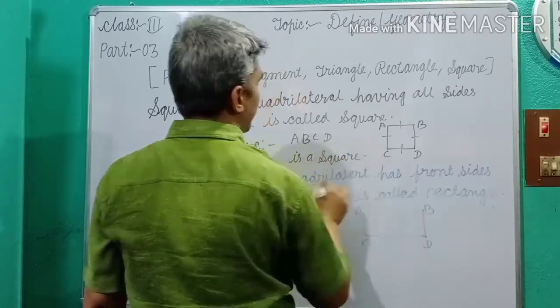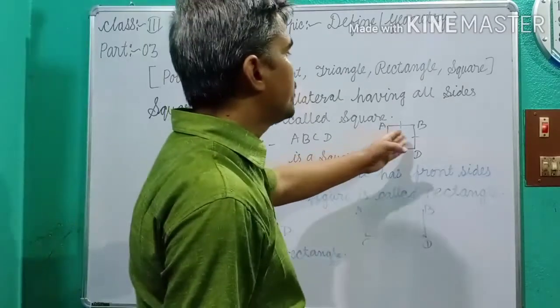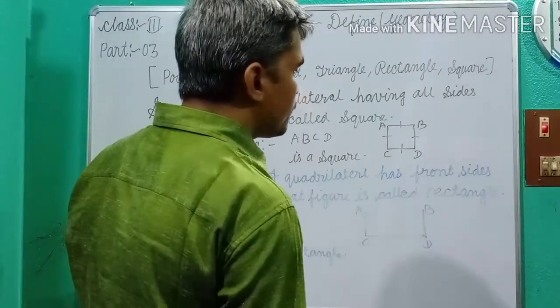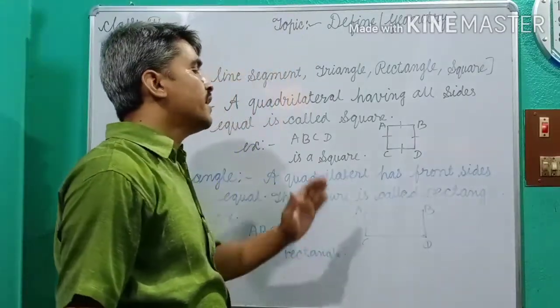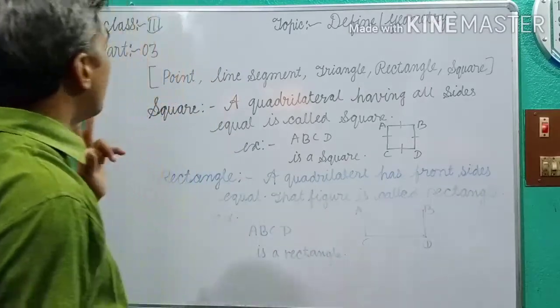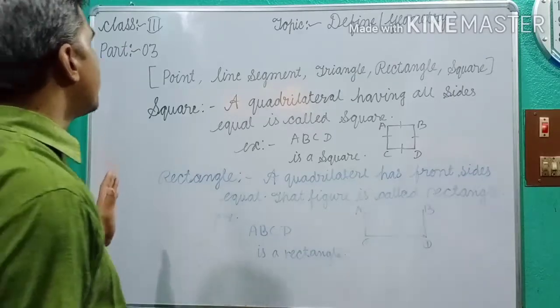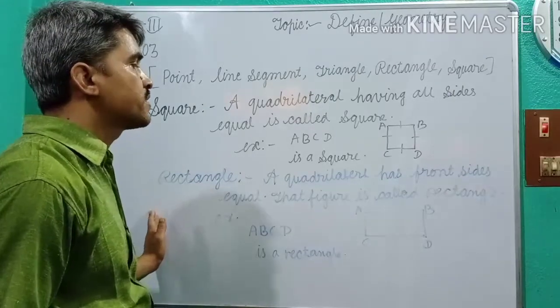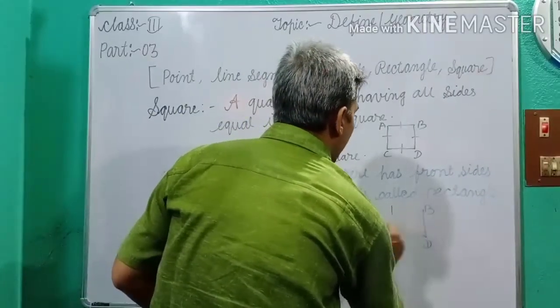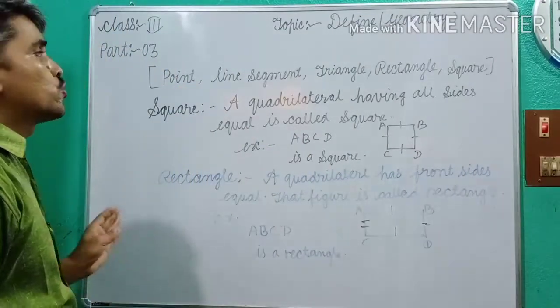Dear students, in previous video, we discussed about how many vertices in a square, 4 vertices, how many sides, 4 sides, how many angles, 4 angles and each angle has 90 degrees. And you know that one difference between a square and rectangles. In rectangles, opposite sides are equal. But in a square, all sides are equal.